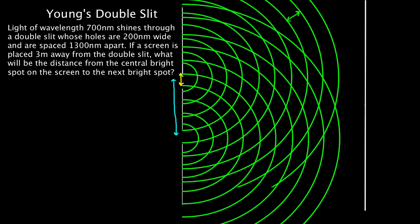If a screen is placed three meters away, here's our screen, and it is three meters away, then what would be the distance from the central bright spot on the screen to the next bright spot?